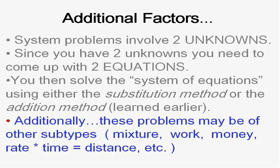Now in addition to being system problems, there may be subtypes. There may be system mixture problems or system money problems or system rate times time equals distance problems. What makes them a system problem is that they have more than one unknown.